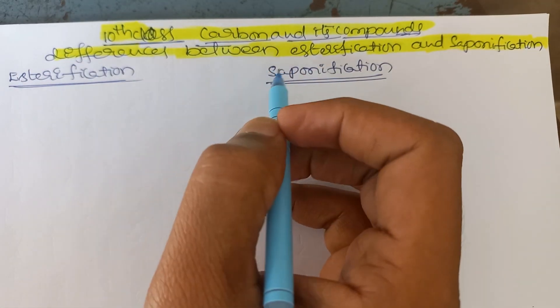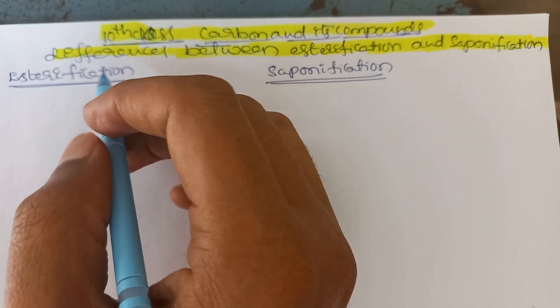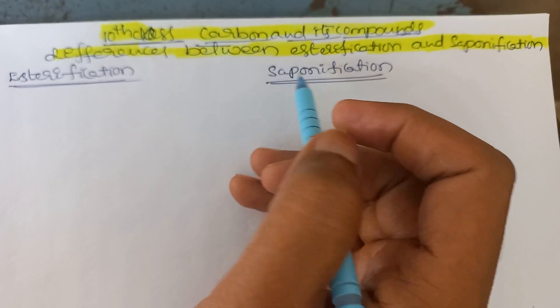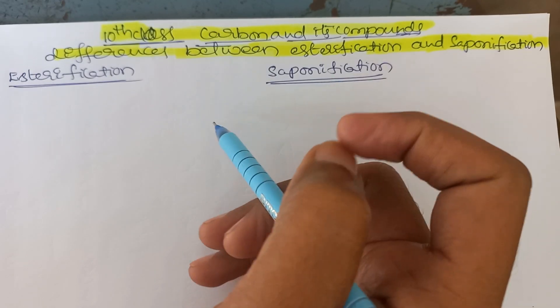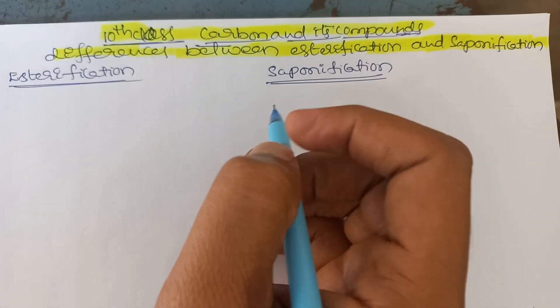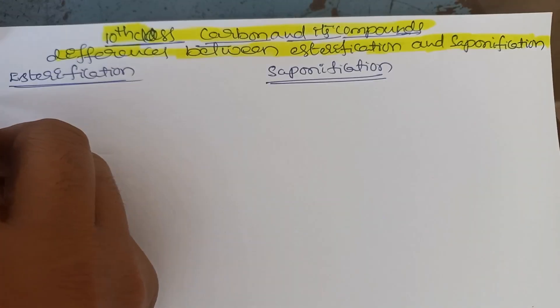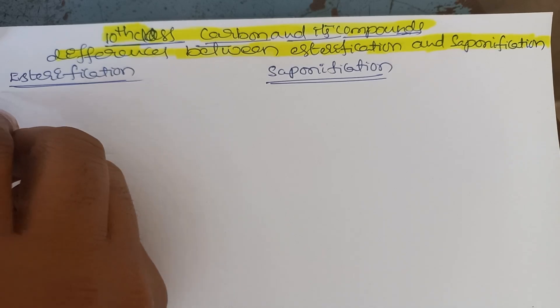10th class chemistry, carbon and its compounds. Topic: differences between esterification and saponification. This is an 8-mark question — important simple definitions.